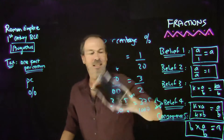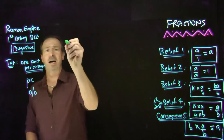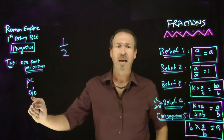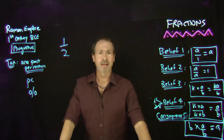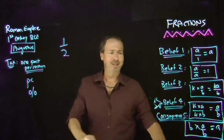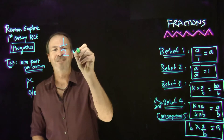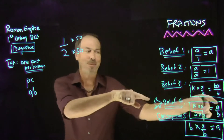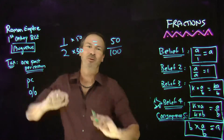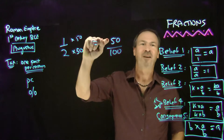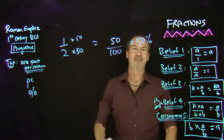Let me go backwards. Let's start with a fraction and see if we can write it as a percentage — something like one-half. Percentage means per 100, so I don't want a denominator of 2, I want a denominator of 100. If I multiply the bottom by 50 and multiply the top by 50 to keep it balanced, I now have the fraction 50 on top and 100 on the bottom. So this must be 50 parts per 100 — it is 50 percent. One-half is 50 percent.